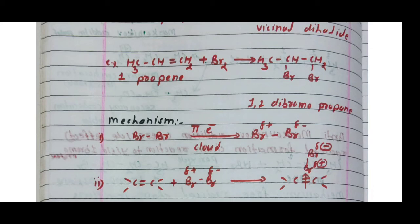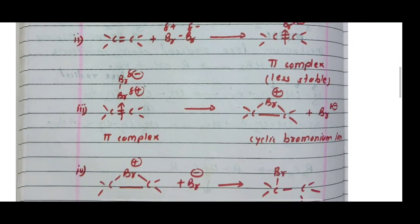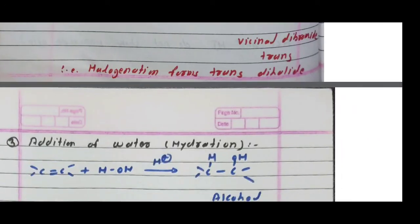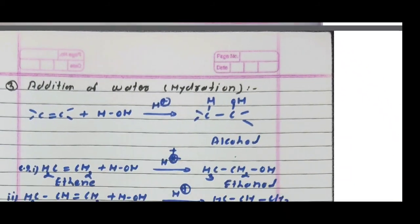Reaction number three is the addition of water to an alkene, called hydration. The reverse reaction — removal of water — is dehydration. Addition of water to an alkene is called hydration, and this is the reverse of acid-catalyzed dehydration of alcohol to form alkene. The product of the hydration reaction is alcohol, and the acid catalyst generally used is dilute sulfuric acid or phosphoric acid.